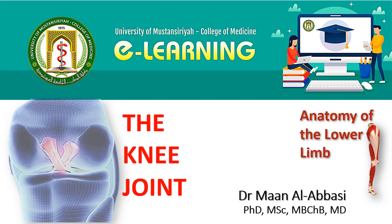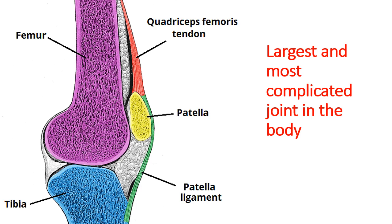Assalamu alaikum. Today we are talking about the knee joint. The knee joint is one of the joints of the lower limb. It is one of the largest and most complicated joints in the body. It's a hinge type synovial joint that only allows flexion, extension, and to some degree rotation. It's formed by the articulation between the patella, femur, and tibia. The fat pads are important to absorb shock.